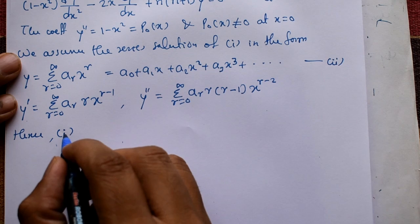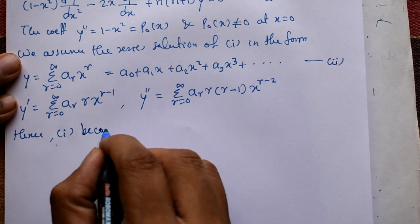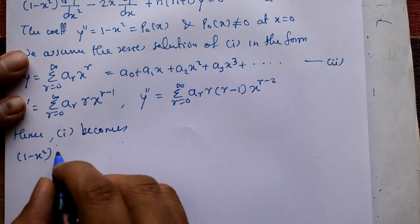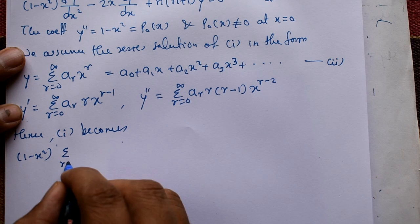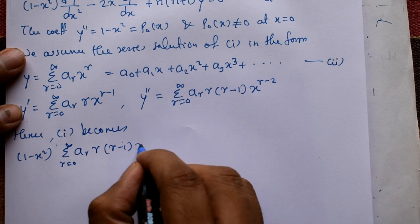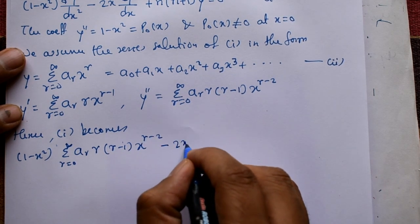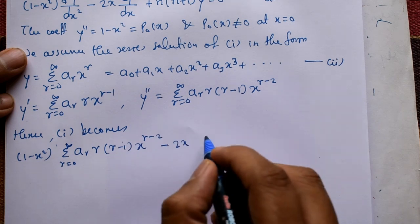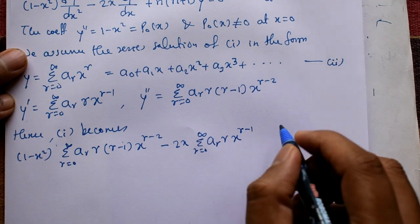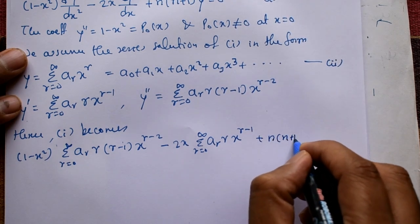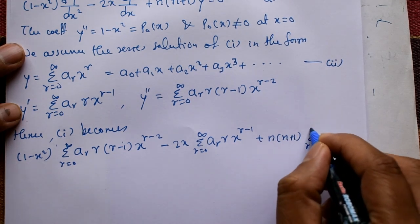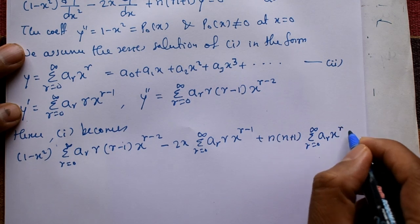Substituting y, y', and y'' into equation number 1, it becomes: (1 - x²)·Σ aᵣ·r·(r-1)·x^(r-2) - 2x·Σ aᵣ·r·x^(r-1) + n(n+1)·Σ aᵣ·x^r = 0.